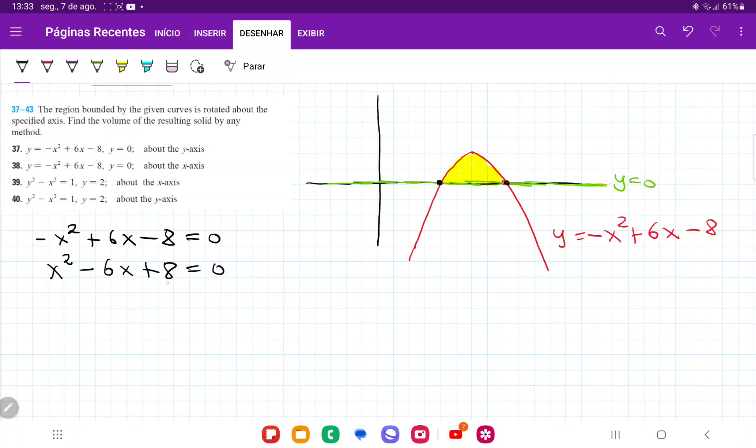Now this factors by trial and error, and the two numbers that we're going to choose are minus 2 and minus 4. So this gives us x minus 2 times x minus 4 equals 0. So we can see here that x equals 2 and x equals 4.